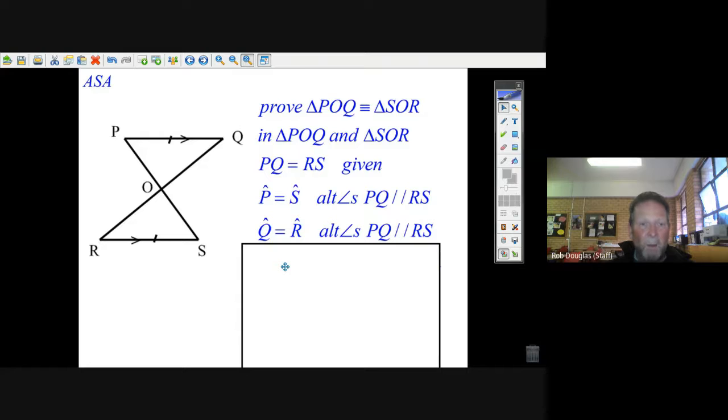too. So angle Q is the same as angle R, same reason: because of alternate angles. And the reason we can use alternate angles is PQ is parallel to RS. Well, we have just used two